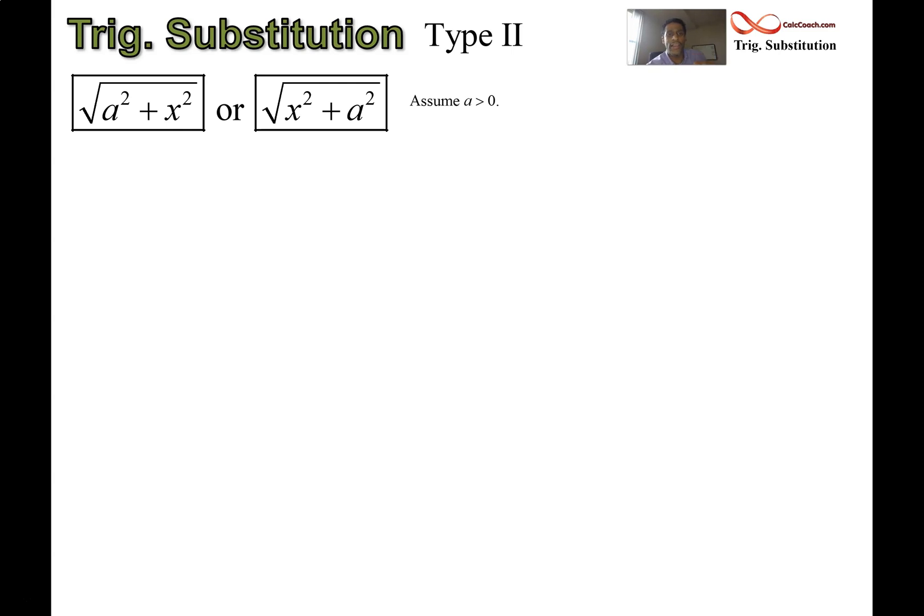The trig sub that's going to work here is to let x equal a tan theta. Let's see why. Why do we need to switch it up? Why can't we just use the same one from before?